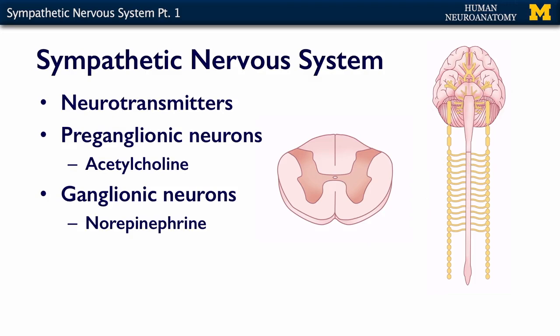The neurotransmitters used by the sympathetic nervous system are different than the parasympathetic nervous system. In the sympathetic nervous system, the preganglionic neurons here in the cord, here in the intermedial lateral cell column, use acetylcholine.